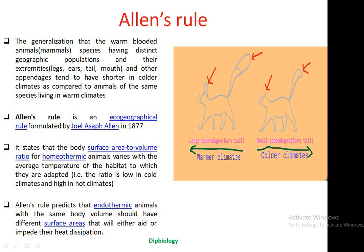In warmer climatic regions, animals have large extremities like legs, ears, tails, and other appendages that are big in size. This large size helps them to dissipate heat faster so that they can maintain their body temperature in hot regions, like desert conditions.